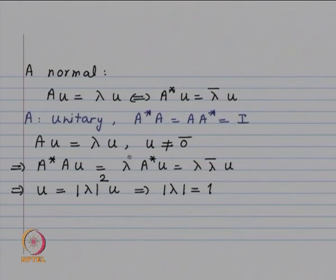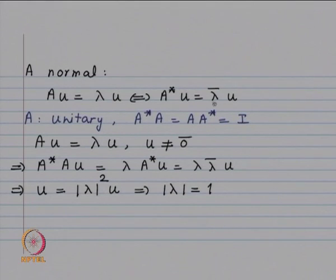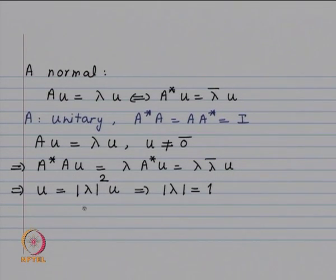For a unitary matrix, if Au = lambda u, apply A*: A*Au = lambda A*u, and since A*u = lambda-bar u, we get u = |lambda|^2 u. Since u is a non-zero vector, this implies |lambda| = 1.